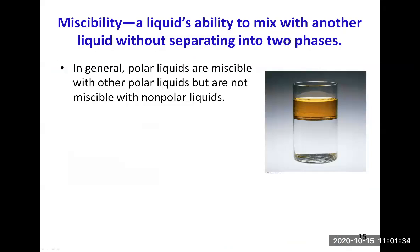Miscibility is the liquid's ability to mix with another liquid without separating into two phases. Miscible liquids form a homogeneous mixture — they look like one substance instead of separating into two phases. In general, polar liquids are miscible with other polar liquids but not with non-polar liquids. This follows the rule called 'like dissolves like': polar liquids dissolve in polar solvents and non-polar liquids dissolve in non-polar solvents.